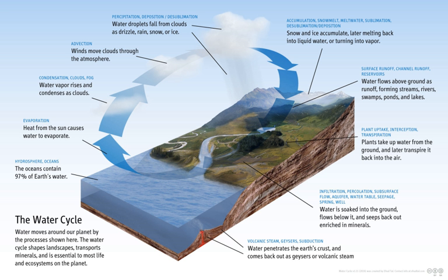As altitude increases, air pressure decreases and the temperature drops. The lower temperature causes water vapor to condense into tiny liquid water droplets which are heavier than the air, and fall unless supported by an updraft. A huge concentration of these droplets over a large space up in the atmosphere becomes visible as cloud. Some condensation is near ground level, and called fog.